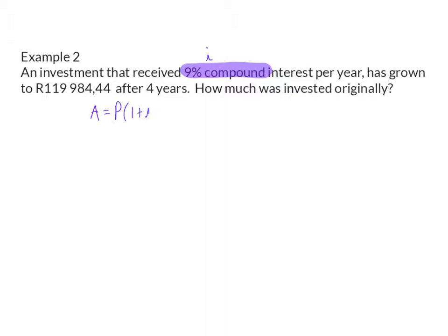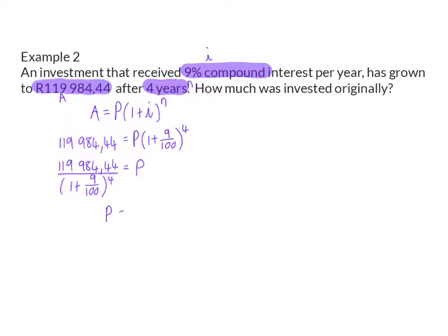Then we are given the final amount as well as the number of years. Now I can substitute all this given information, and just like with simple interest, to solve the P value I need to get rid of the whole bracket, and that means I divide by the bracket on the left hand side. The original amount invested, or the P value, is R85,000.